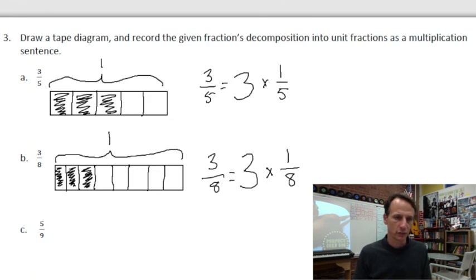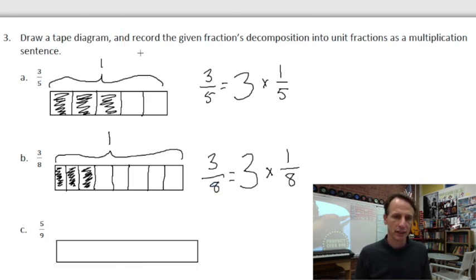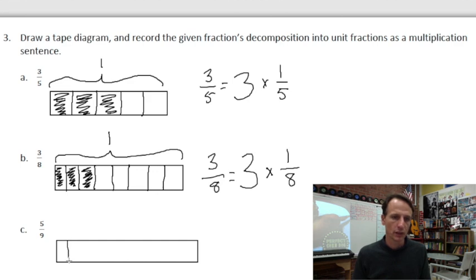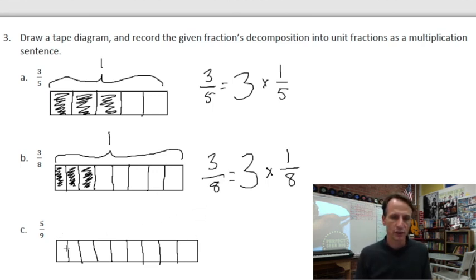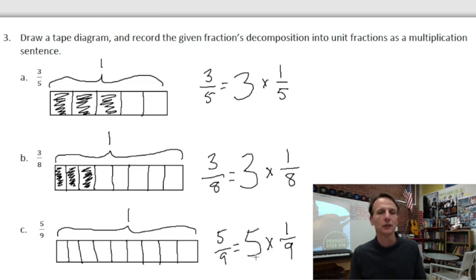Now let's do five-ninths — this is the more challenging one to draw. I'll draw eight lines to make nine partitions, trying to equally space them. I get nine partitions, and the whole thing's value is one whole. Five-ninths — how many times will I have the unit fraction one-ninth? Five times. So five-ninths equals five times one-ninth.